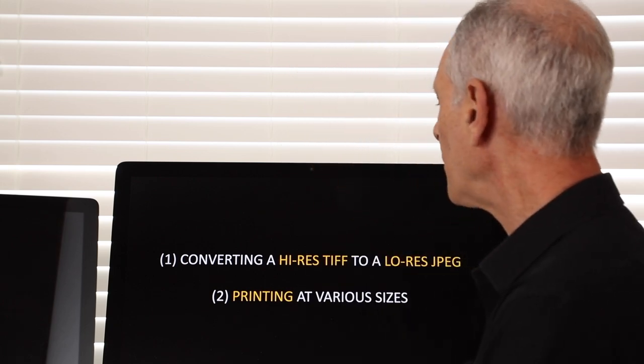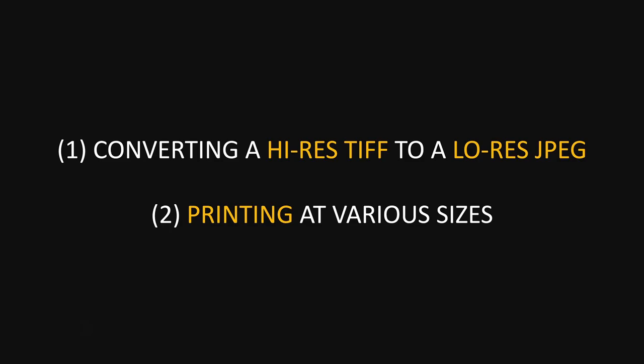There are two reasons why you need to change the size of the image coming out of your camera after you've gone through all the processing steps. Generally, if you have a contemporary camera, you're going to end up with a 100-plus megabyte TIFF file. There are two things: one is converting that high-res TIFF file into a usable JPEG, and the second is printing at various sizes.